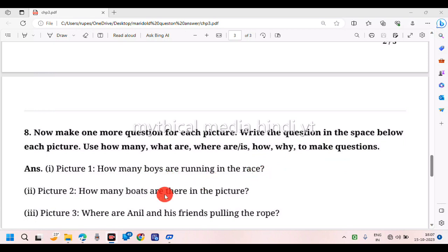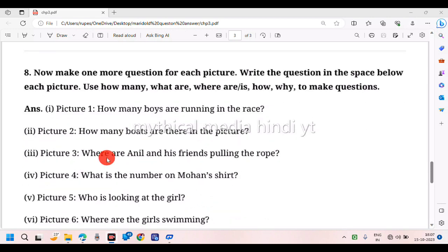Where are Anil and his friends pulling the rope? What is the number of Mohan's shot? Who is looking at the girl? Where are the girls swimming?